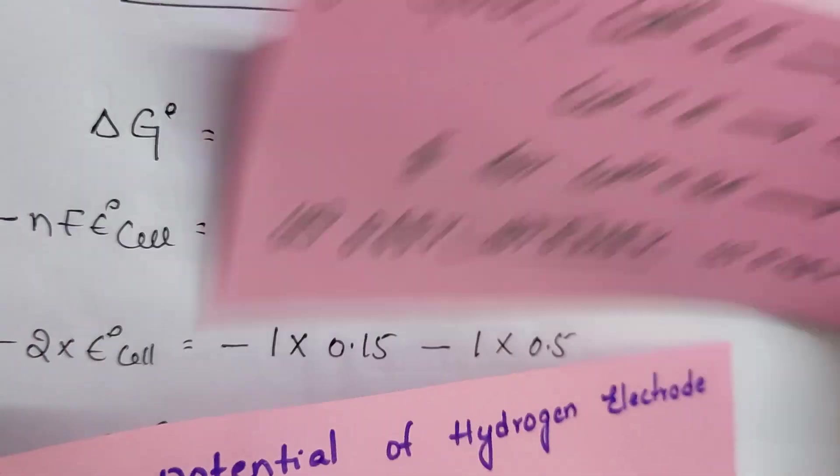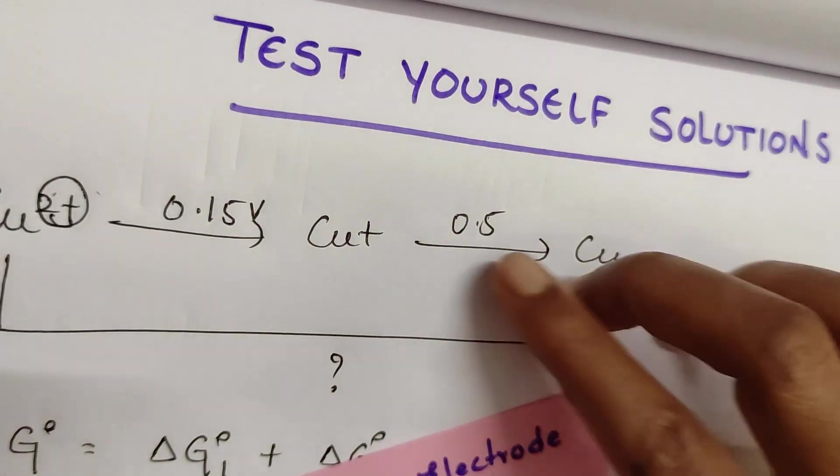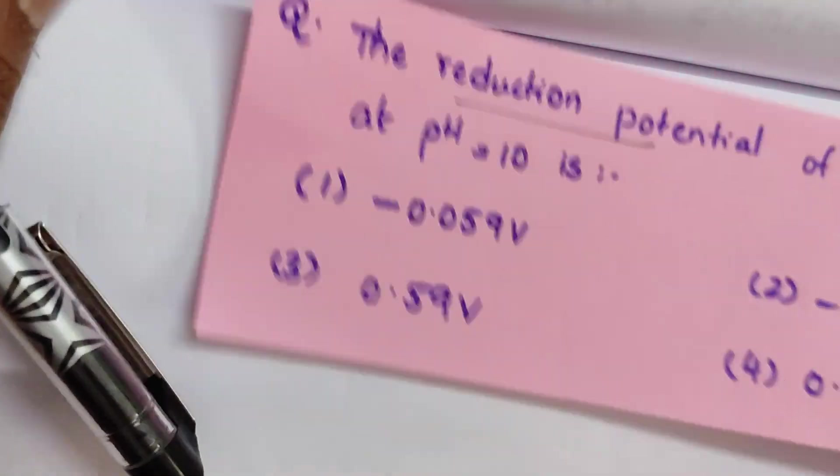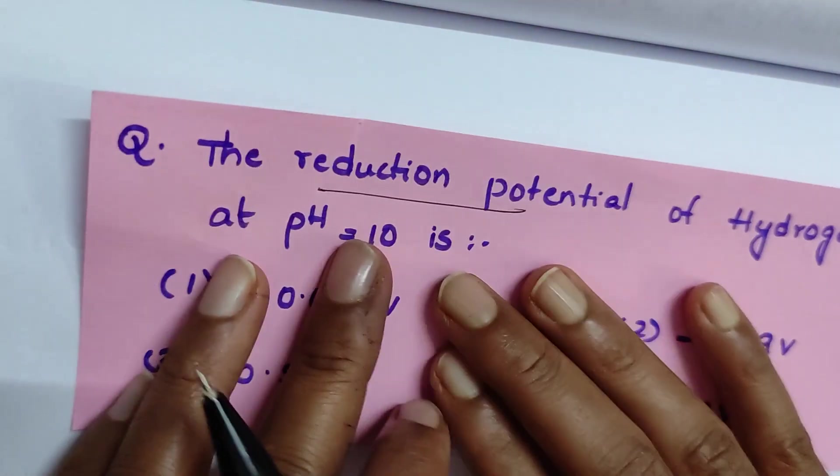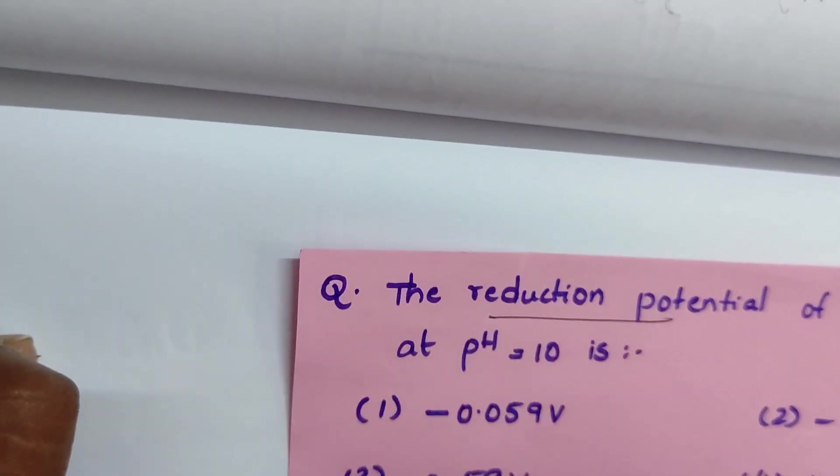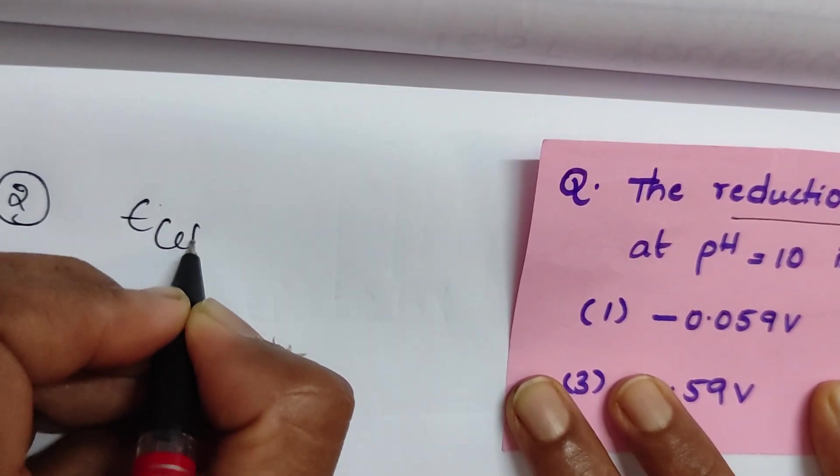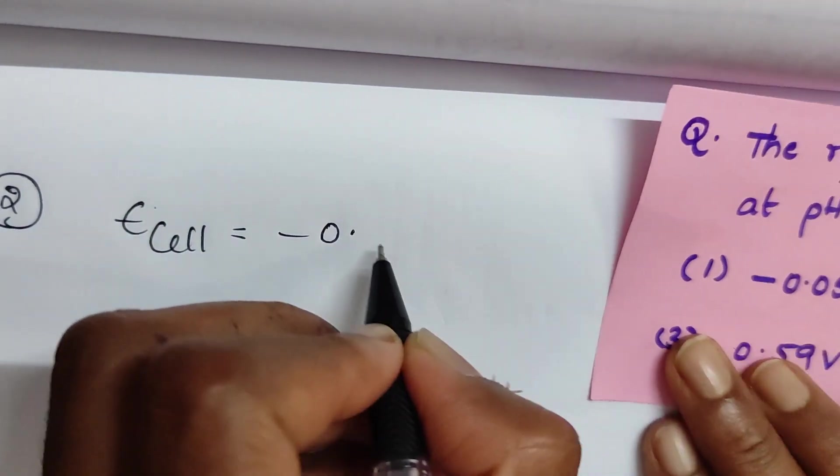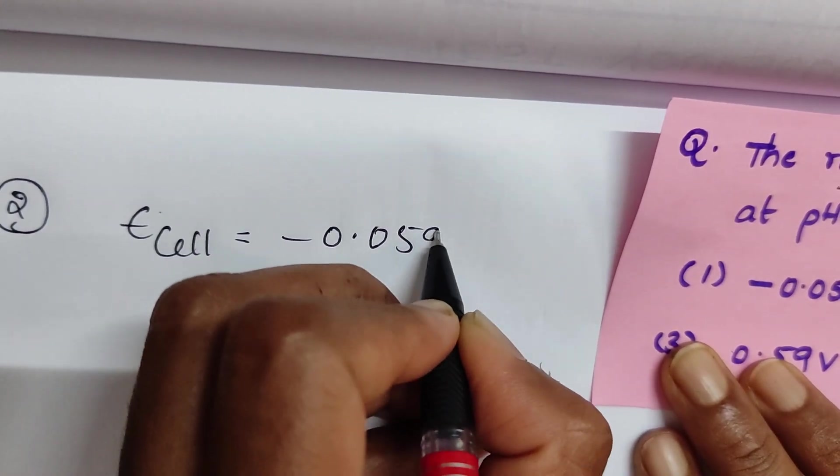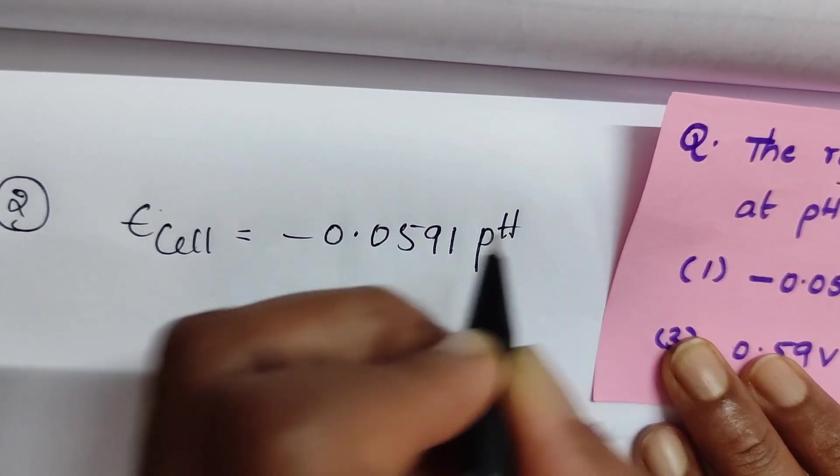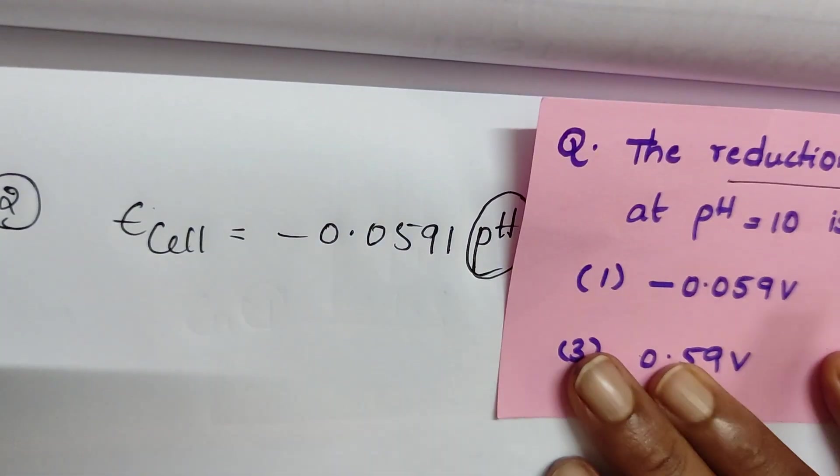Now see question number two, the trick which I asked that is based upon a reference electrode. I have given the question, check out your answer. E°cell you know is equal to minus 0.0591 times pH. This is the formula because it is acting as an anode.